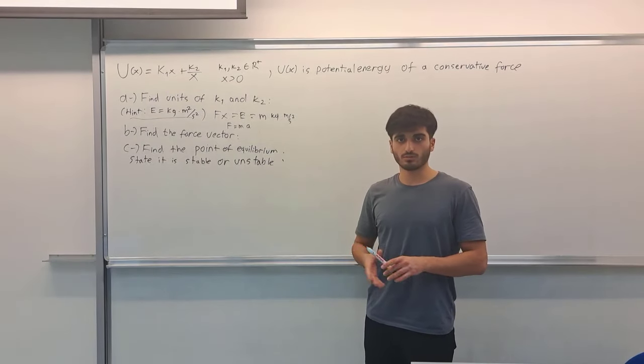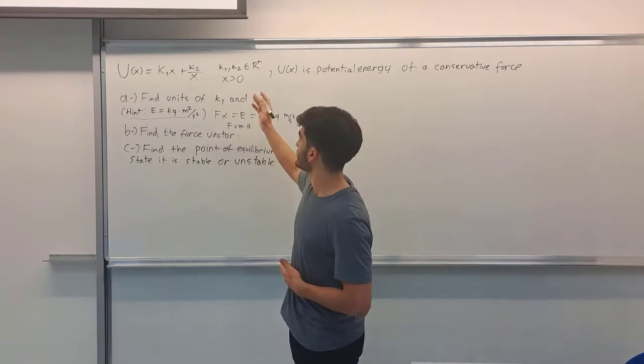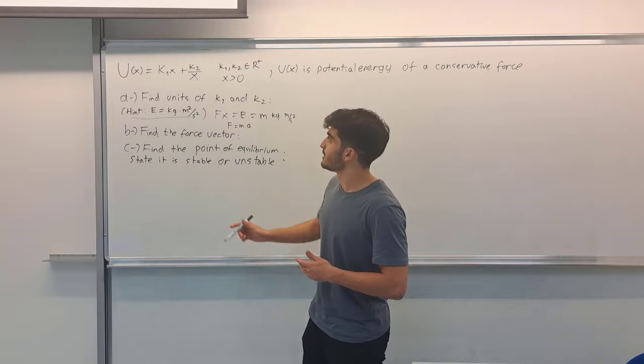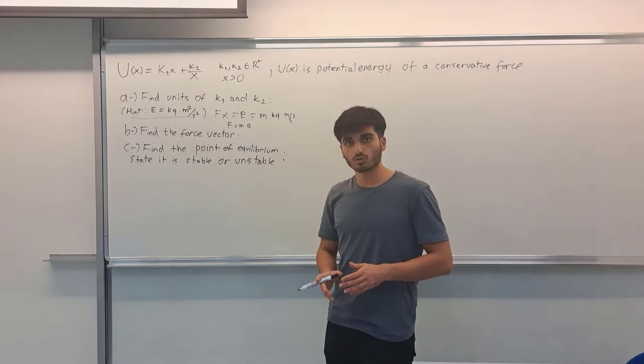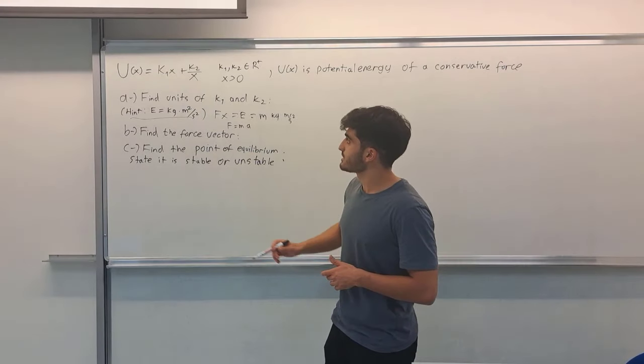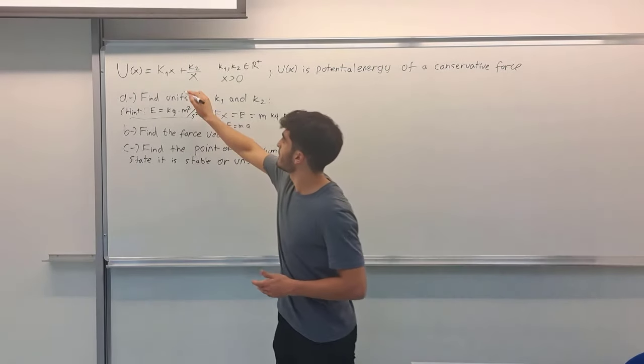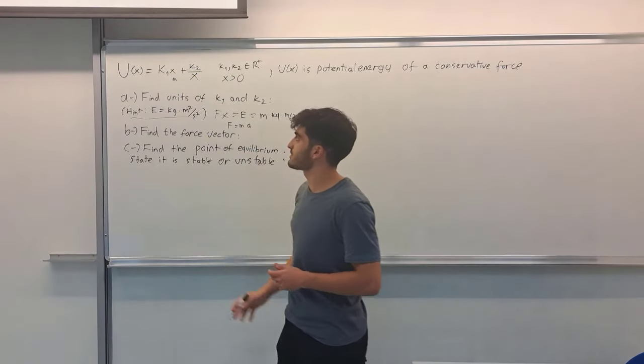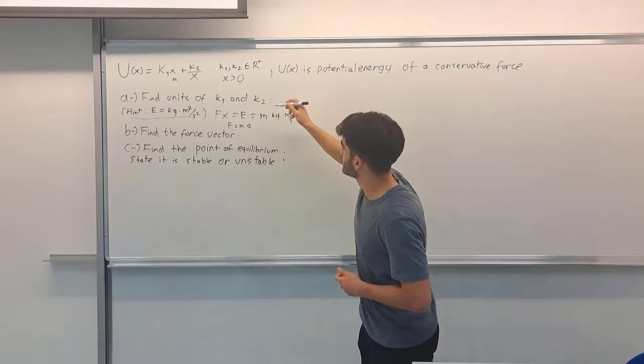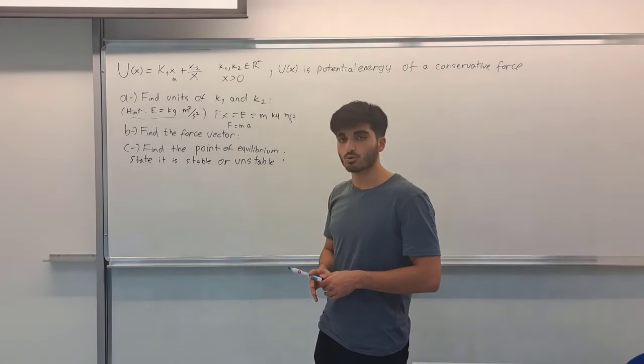Now you can find what is the unit of k1 and k2. Since k1x and k2 over x are in the form of sum, their units should be also equal to the energy unit. Therefore k1's unit is also given here as k1x. This gives us one meter, so k1 should be meter squared. The total energy is kilogram times meter squared per second squared, so one meter is here.